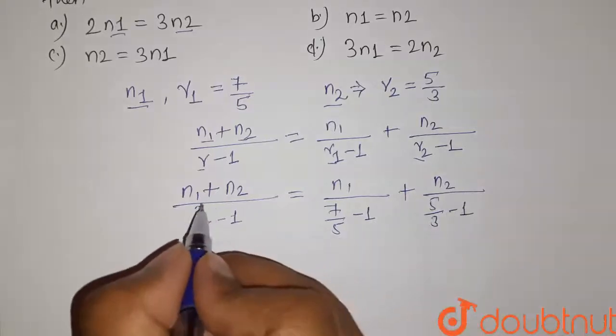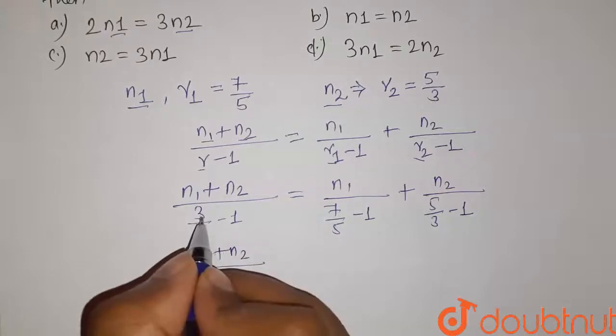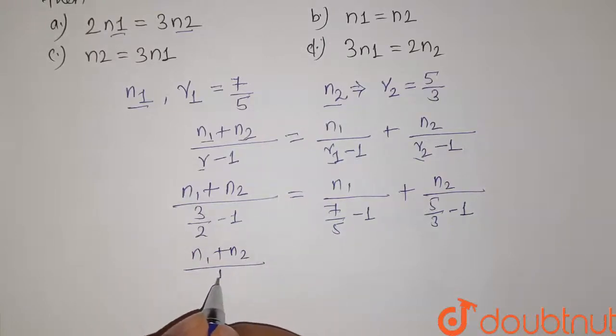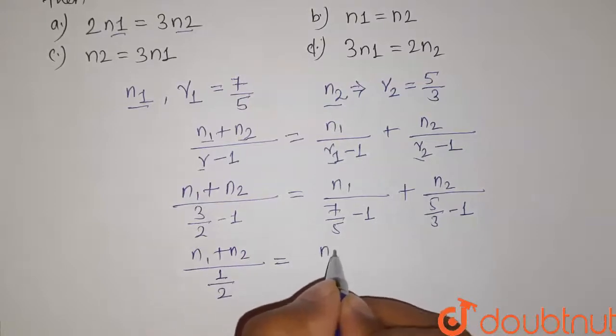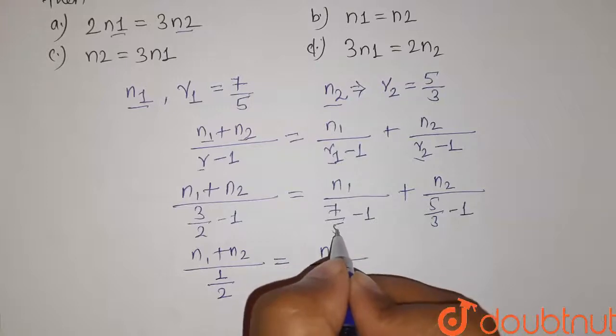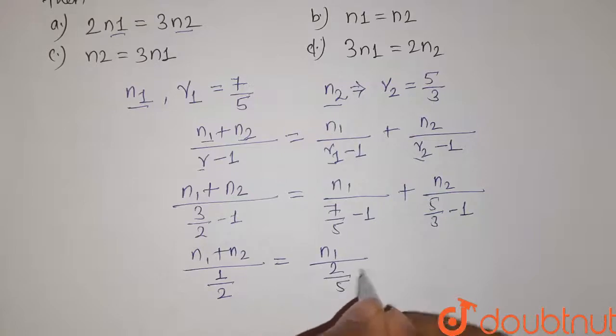So now let us simplify it. Here it will be (N1 + N2) divided by (3/2 - 1), which equals 1/2, equals N1 upon (7/5 - 1), which will be 2/5.